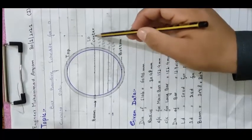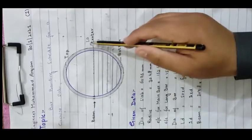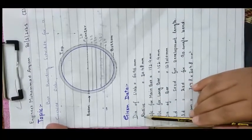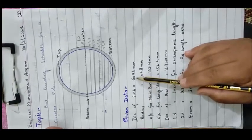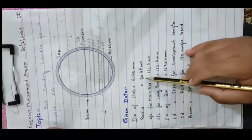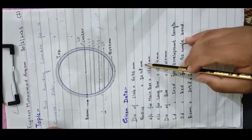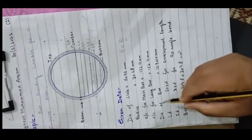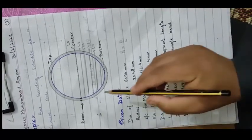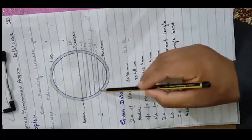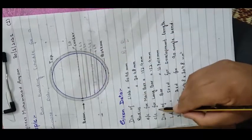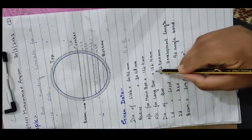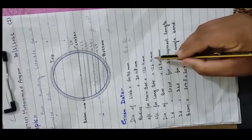This is the center of the circular slab and this is the diameter. Now the given data: diameter of slab is 6096 millimeters, radius is 3048 millimeters — radius equals diameter divided by 2. The center-to-center distance for main bars is 152.4 millimeters, and the center-to-center distance for long bars is also 152.4 millimeters.